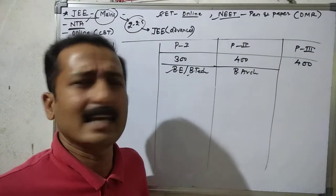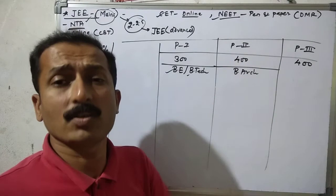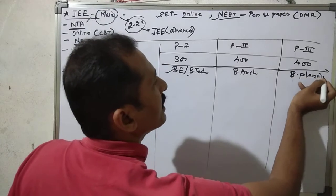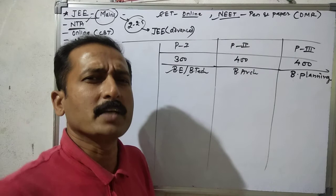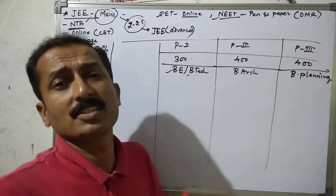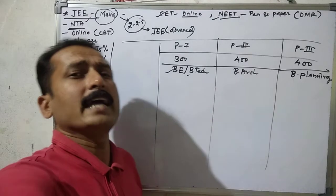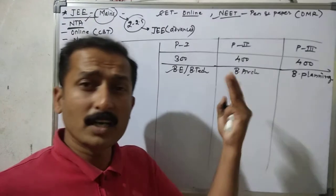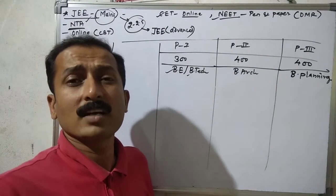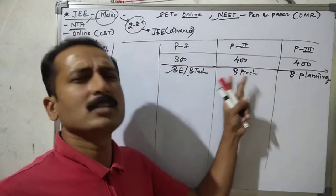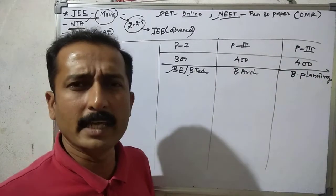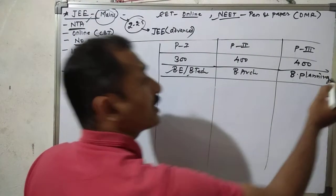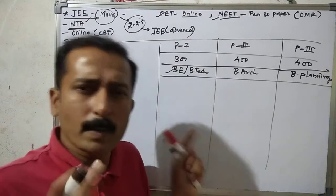Paper 3 is for Bachelor of Planning — everything about planning and architecture. You can apply for all three papers if eligible. Physics, Chemistry, and Math are the three most important subjects for Paper 1. For Paper 2, Bachelor of Architecture, Math, aptitude test, and drawing are the key sections.